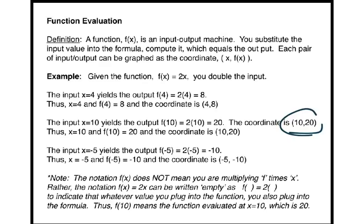Let's try a negative input value. The input x = -5 yields the output f(-5) = 2(-5) = -10. Thus, x = -5 and f(-5) = -10, and the coordinate is (-5, -10).